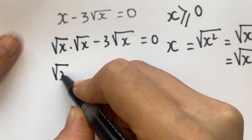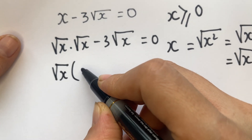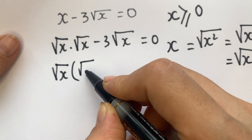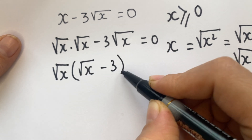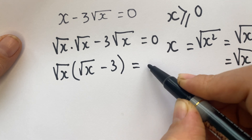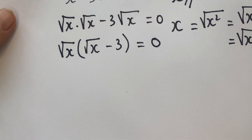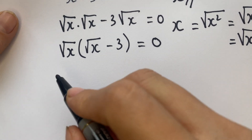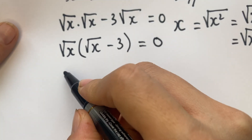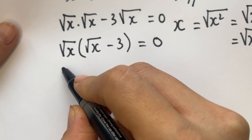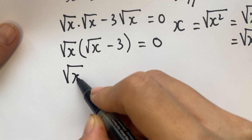Therefore, factoring out square root of x, the remainder gives us square root of x minus 3 equals 0. I think it's quite simple for everyone. So we have to find the value of x like that.